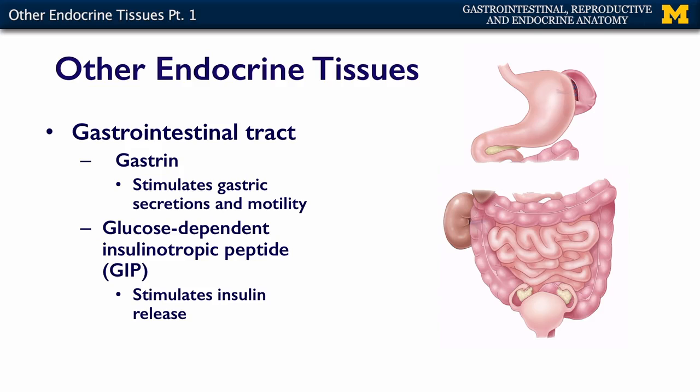The gastrointestinal tract has several hormones. It secretes gastrin, and gastrin stimulates other gastric secretions and gut motility. In the last couple of years, they've discovered glucose-dependent insulinotropic peptide, or GIP, which is secreted by the gut and stimulates insulin release from the pancreas.